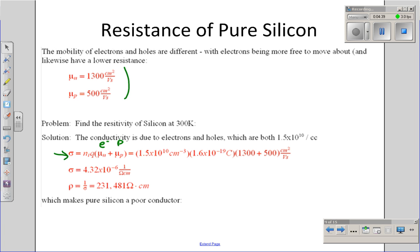the conductivity would be 4 times 10 to the minus 6, 1 over ohm centimeters. Or, for units that we're more familiar with, the resistivity would be 231,000 ohm centimeters. That makes silicon a poor conductor at room temperature.